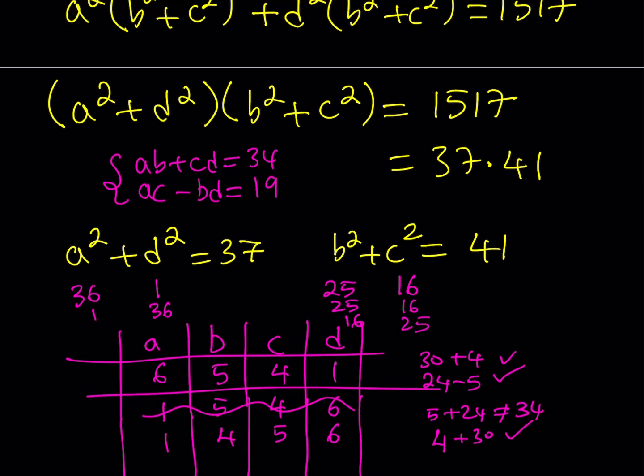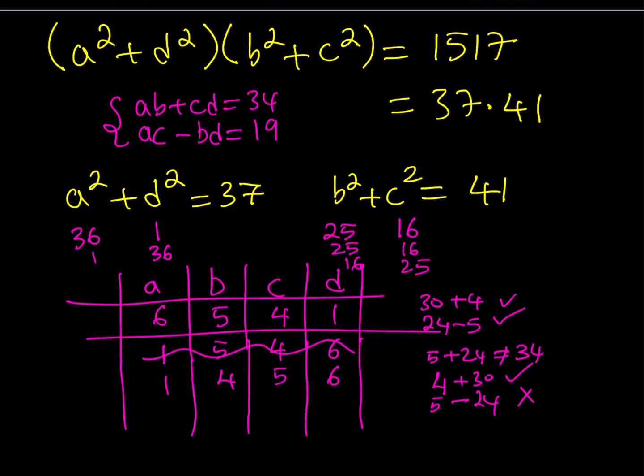The second equation, AC is 5, minus BD is 24. This would give me negative 19. So this would not work. You see? So only particular arrangements will work in this case. That's why we need to check the original problem. So this switch didn't work either.